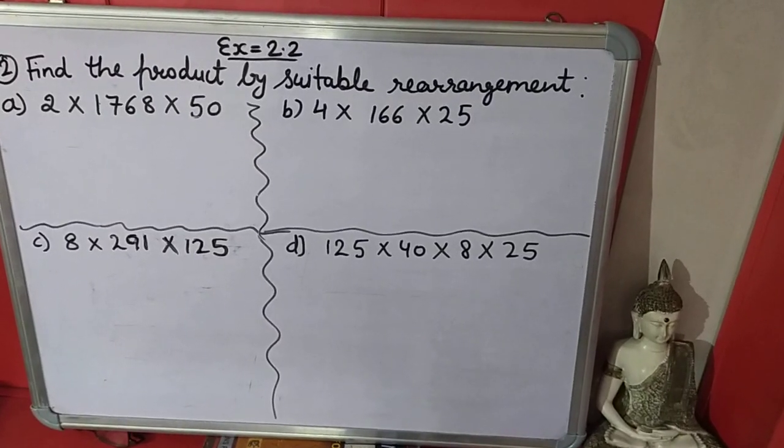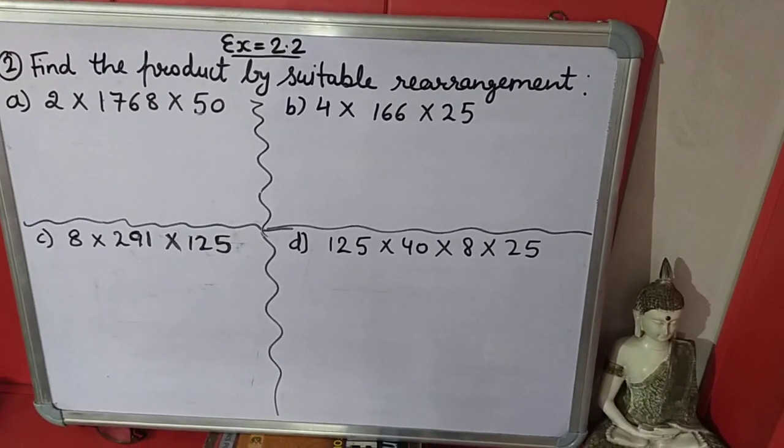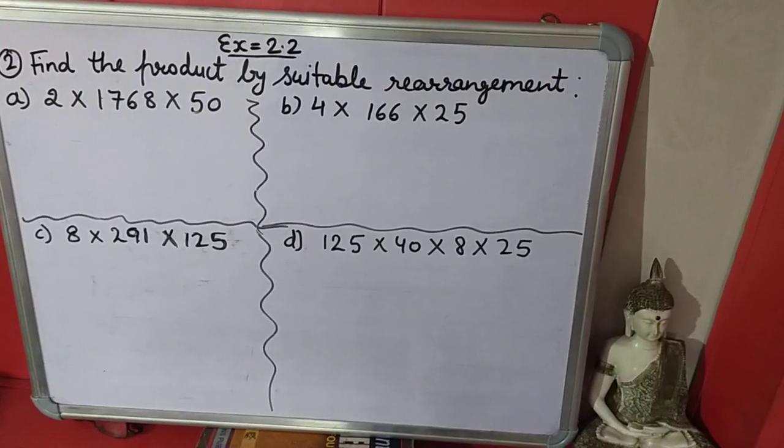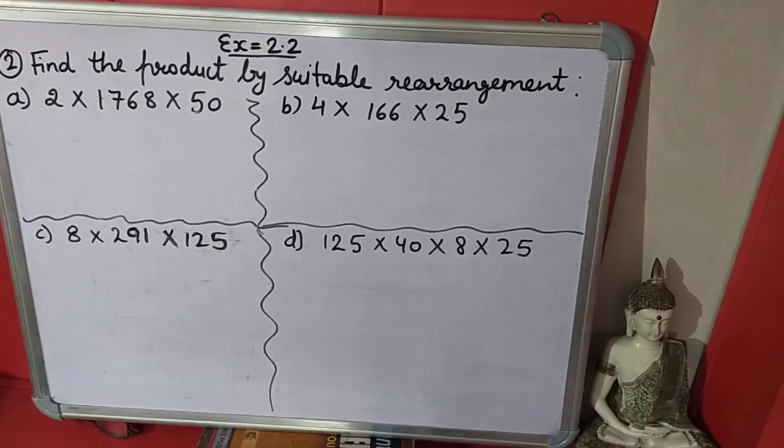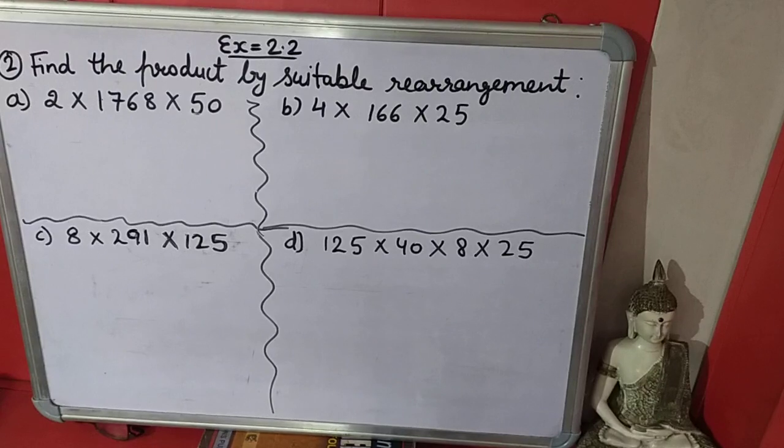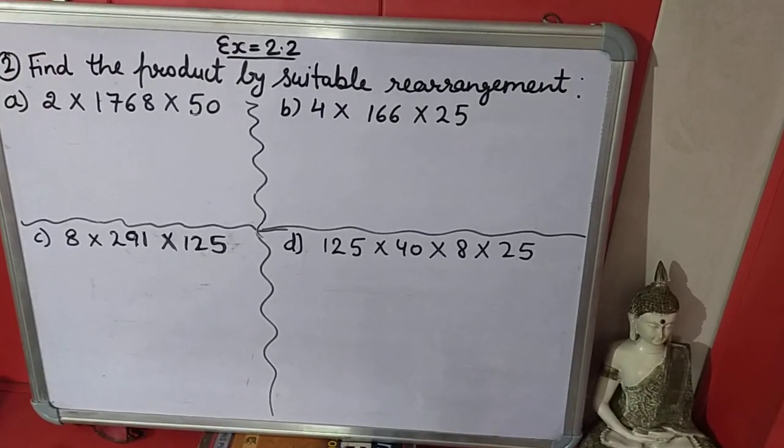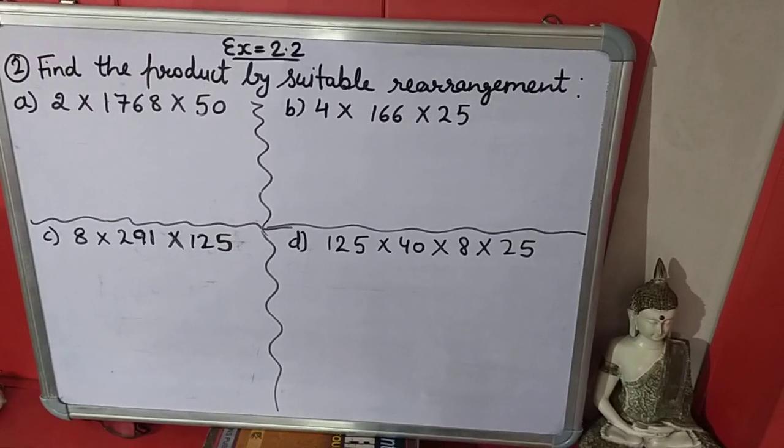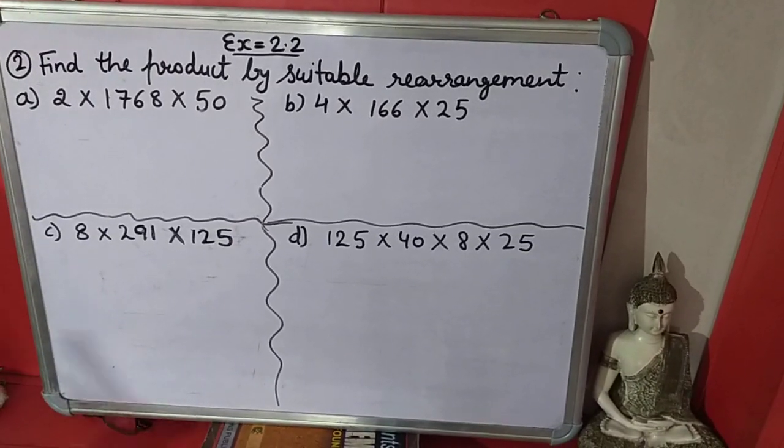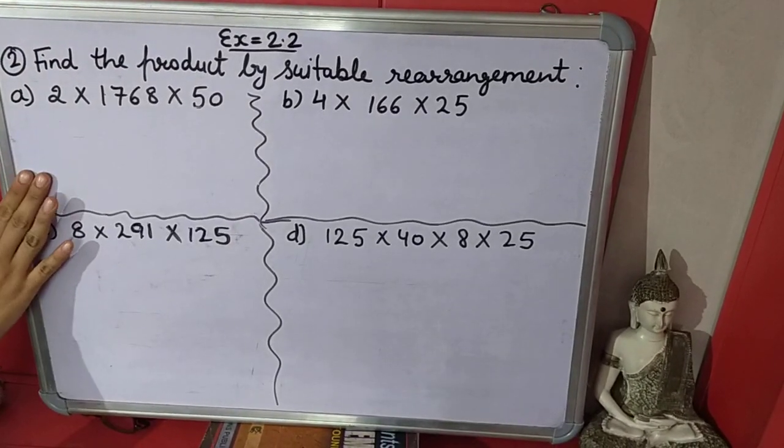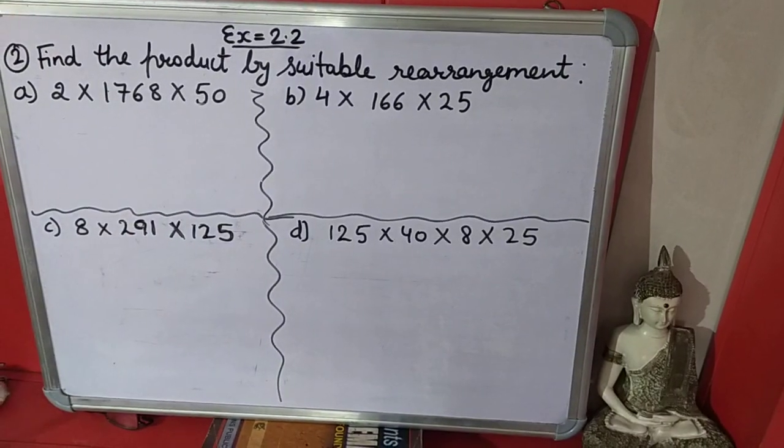Good morning students. In last module we did the first question of exercise 2.2. Now we will start the second question of exercise 2.2. The second question is find the product by suitable rearrangement. In the first question we did find the sum by suitable rearrangement and changed the positions of the numbers. In this question also we will change the position of the numbers.